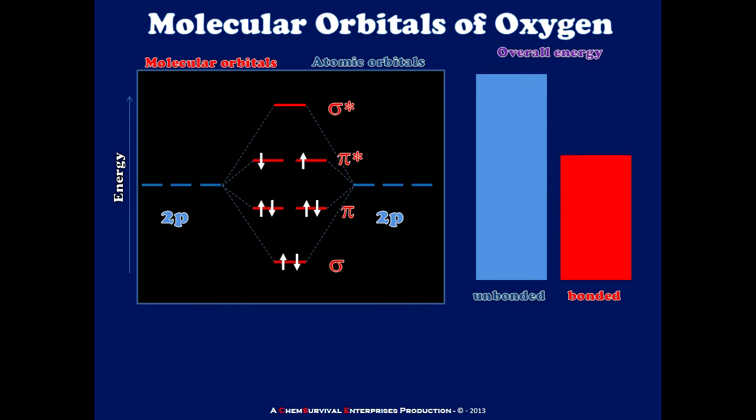You'll also notice that because I'm following Hund's rule and the Pauli exclusion principle, these 2 electrons go into individual pi-star orbitals. The consequence of this should be clear.